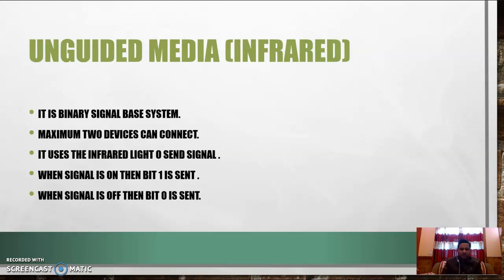Infrared is a binary signal-based system because computers depend on binary signals. Signals can be transferred by two methods: digital and analog. When a signal is transferred in digital form it is called a binary signal, so infrared is a binary signal-based system. Maximum two devices can connect, meaning its range is very limited — one device can be connected with another, no more than two devices on the same network.